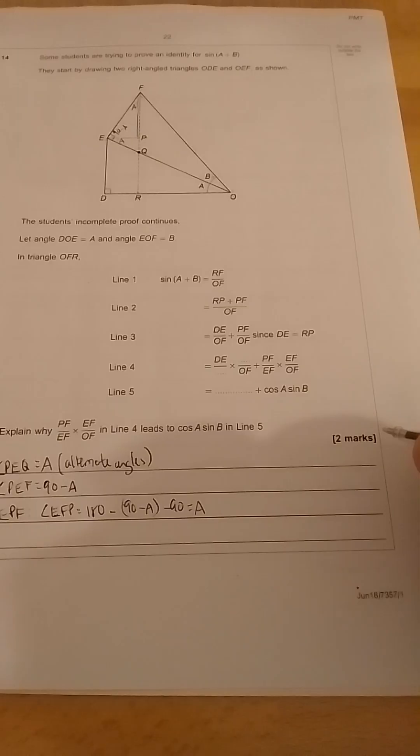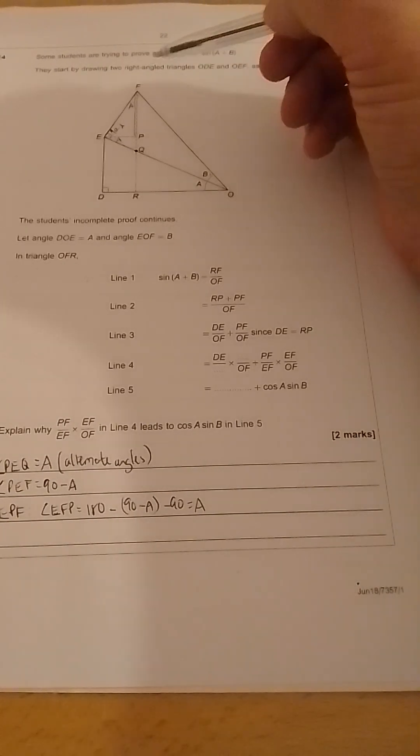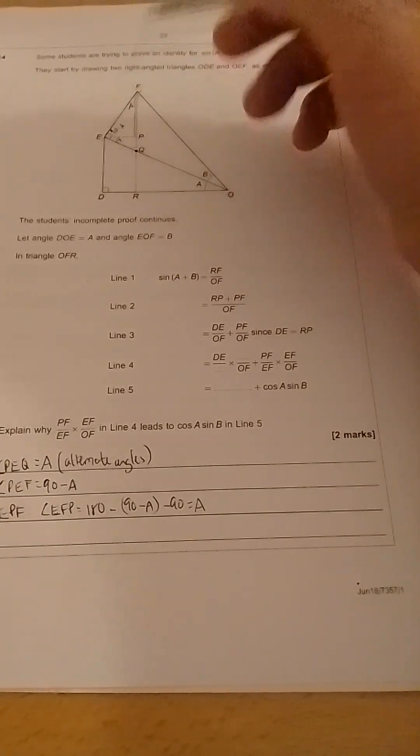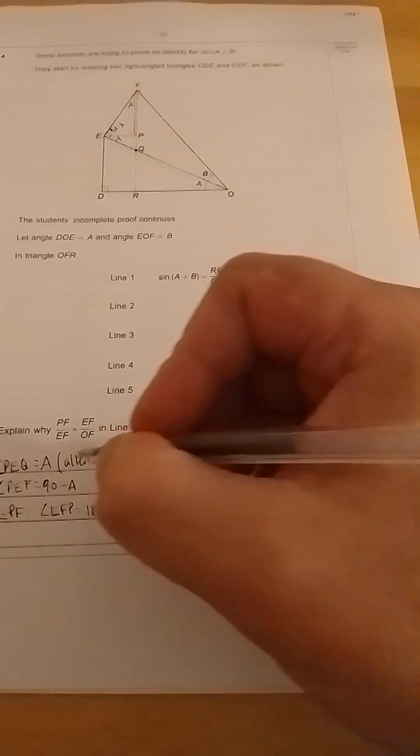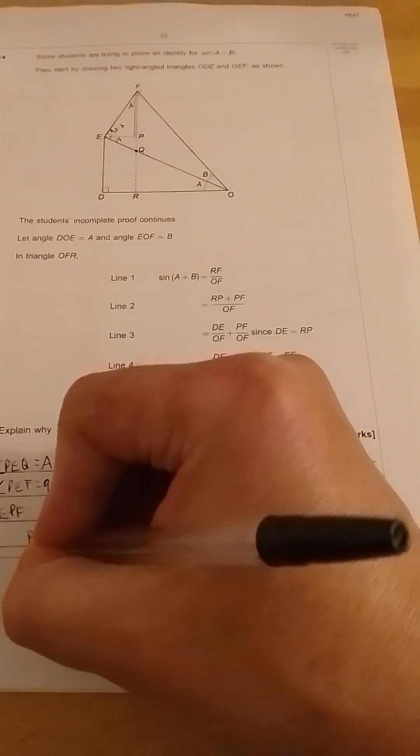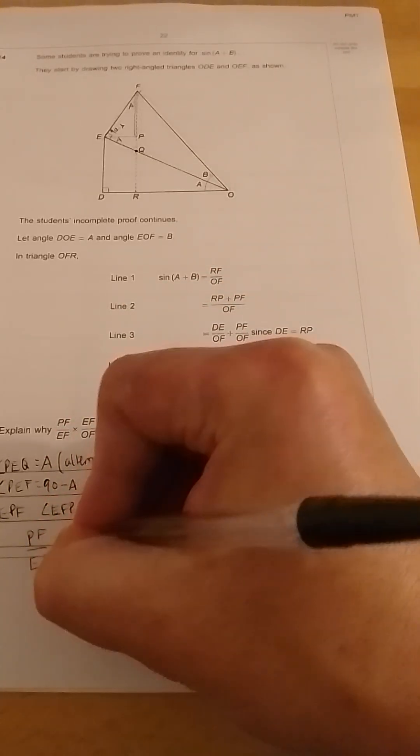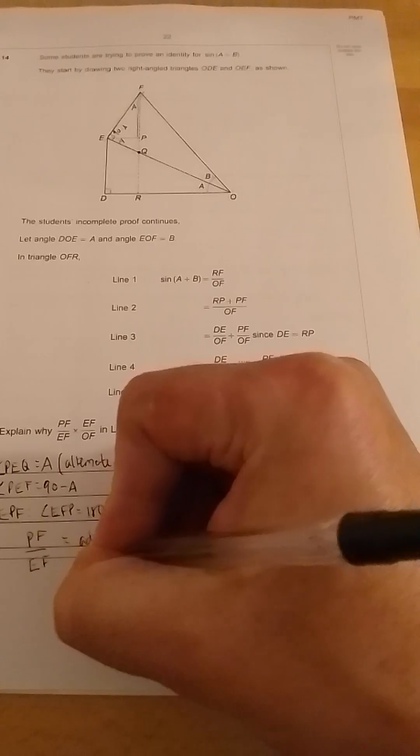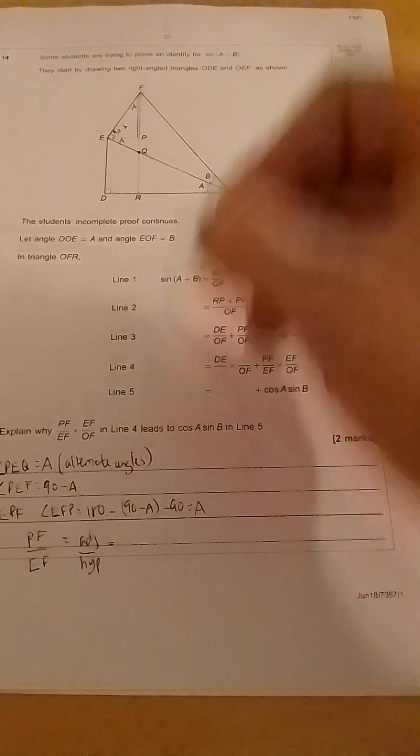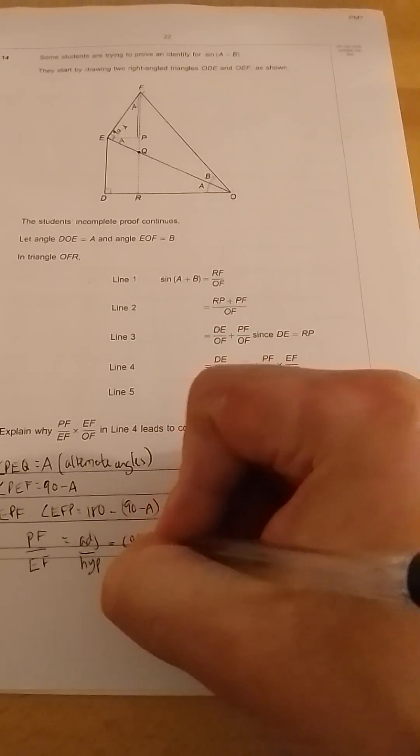And now for triangle EPF, we can see that we have two of the sides that we're interested in. PF is the adjacent, and EF is the hypotenuse. So we can say PF over EF is equal to the adjacent over the hypotenuse. Since the angle is A, it will be cos A.